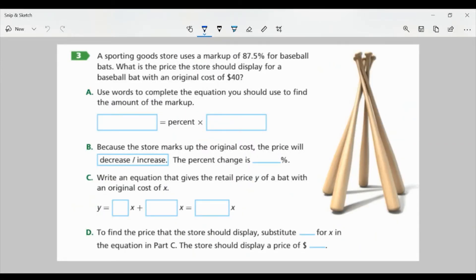So let's look at task three on page 65. A sporting goods store uses a markup of 87.5% for baseball bats. What is the price the store should display for a baseball bat with an original cost of $40? Part A, use words to complete the equation you should use to find the amount of the markup. Markup equals the percent times the original cost of the bats.